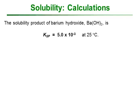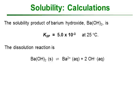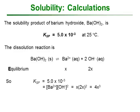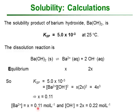Let's look at a typical calculation. Take barium hydroxide, which has a Ksp value of 5.0 × 10⁻³ at 25°C — we must specify the temperature because Ksp varies with temperature. Upon dissolution, we get barium ions and two hydroxide ions for every barium ion, according to the stoichiometry of the ionic compound. At equilibrium we have x mol/L of barium and 2x mol/L of hydroxide. Substituting into the Ksp expression — noting that we square the OH⁻ concentration — gives Ksp = x × (2x)² = 4x³. Solving this, the barium concentration is 0.11 mol/L and the hydroxide concentration is 0.22 mol/L.